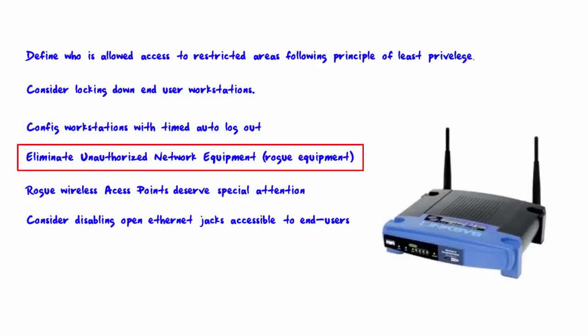Eliminate unauthorized network equipment — that is, rogue equipment. The most common type will be end users who install a device for convenience or fun, not realizing the security problems it can cause. They don't realize they could be creating a back door into the network. Make sure your AUP clearly addresses what is and is not allowed to be installed on the network, and make sure end users are educated about this.